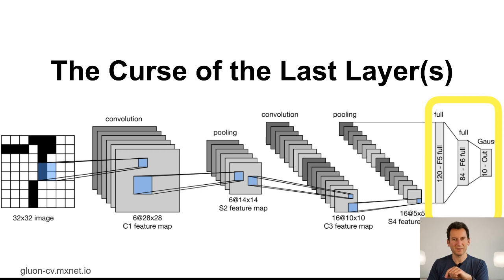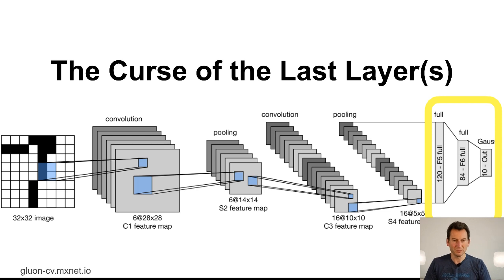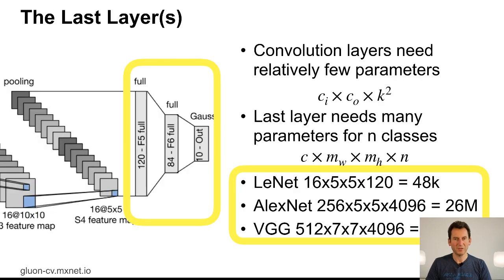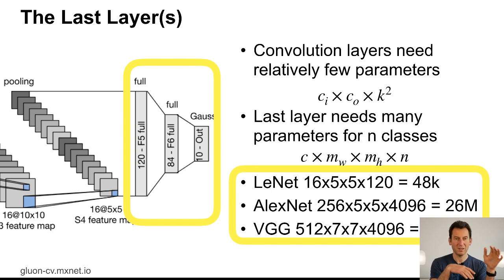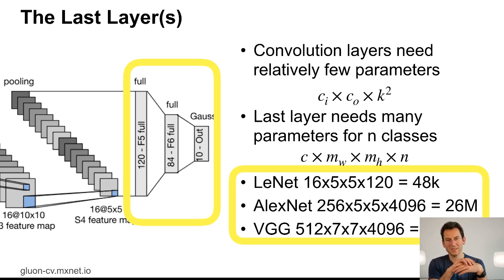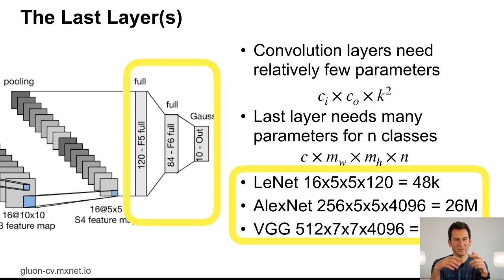If we look at the last layers in LeNet, they're not that big — basically just 120 hidden units, 84, and then 10. That wasn't a big deal relative to what came before. But if we move on to AlexNet or VGG, those things actually get quite massive. The last layer connecting from the convolution has number of channels times the width and height of the last resolution before you go dense. In LeNet there were 48,000 parameters. In AlexNet, there were 26 million parameters — about three orders of magnitude more. In VGG, it was four times that number again. So that's pretty bad.